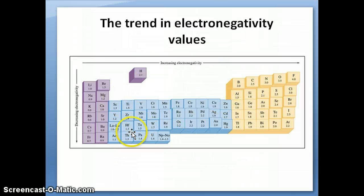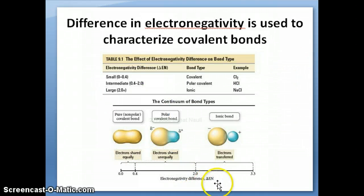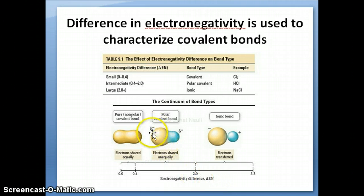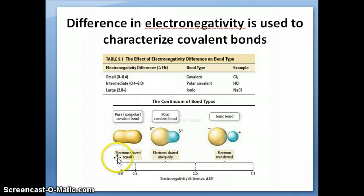There is a trend in electronegativity, which is increasing in a particular direction. We can calculate something called the difference in electronegativity, symbolized by delta EN, which is just the difference in the electronegativity values between the two atoms involved in that bond. If it's above a certain value, we call that bond polar; otherwise, we call it nonpolar.